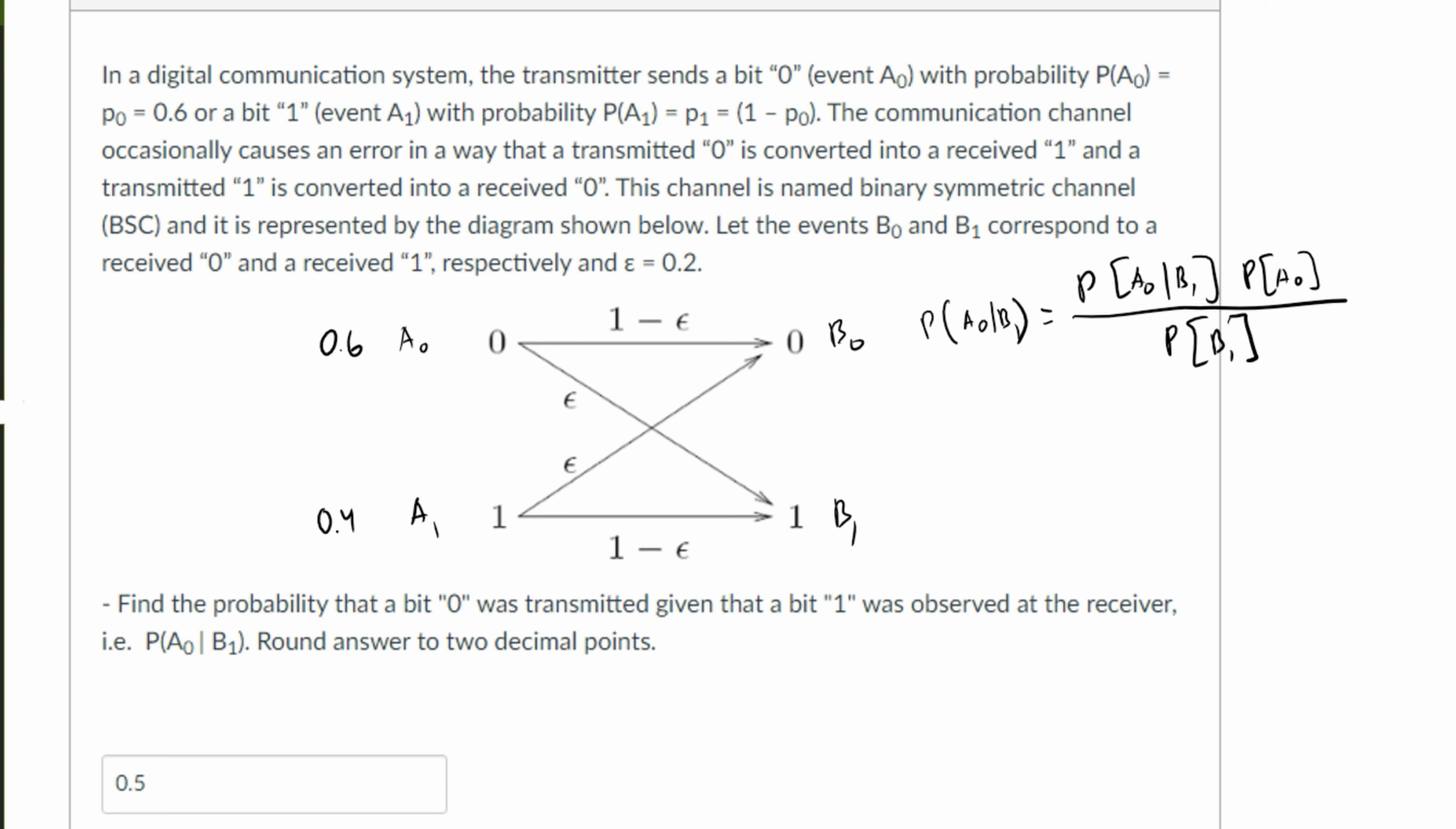Now the top are pretty easy. The probability that this A0 is going to go to B1 is just this ε right here. So that's what this is. And the probability of A0, we know it's just this 0.6 right here.